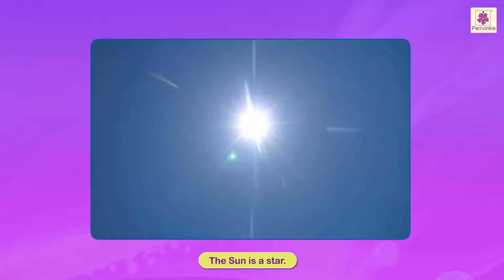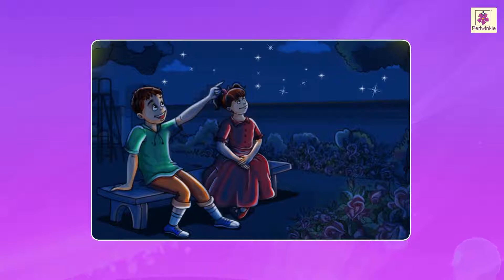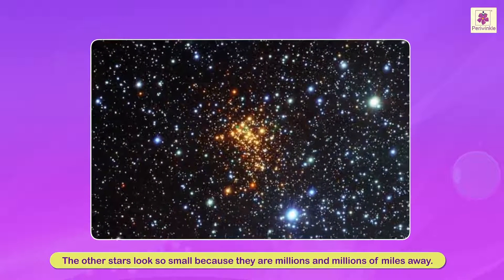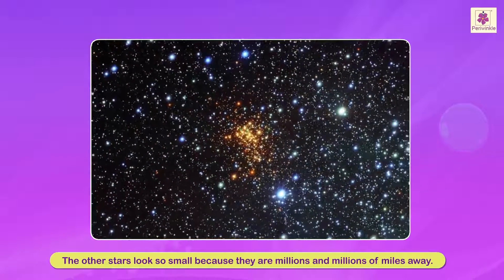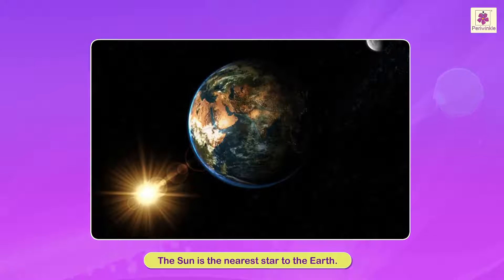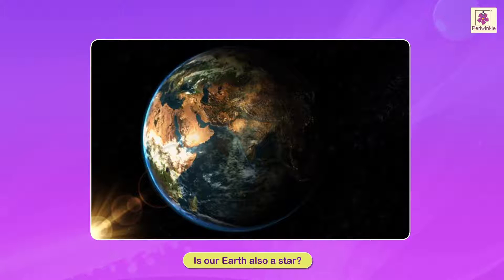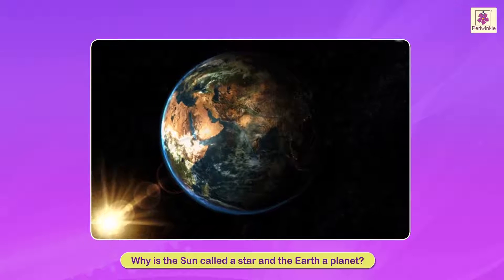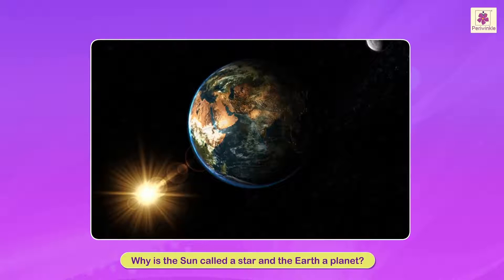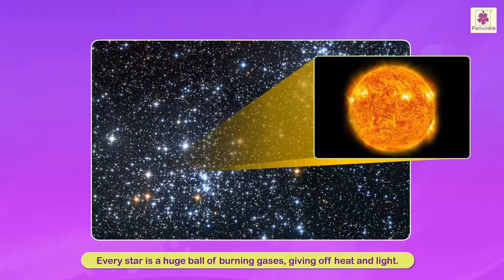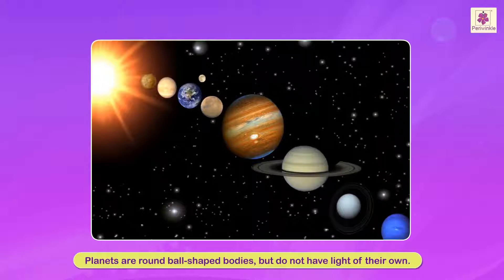Oh, you mean the Sun — but is the Sun a star? Yes, the Sun is a star. The other stars look so small because those stars are millions and millions of miles away. The Sun is the nearest star to the Earth. Earth is not a star, it's a planet. Every star is a huge ball of burning gases giving off heat and light. Planets are round ball-shaped bodies but they do not have any light of their own.